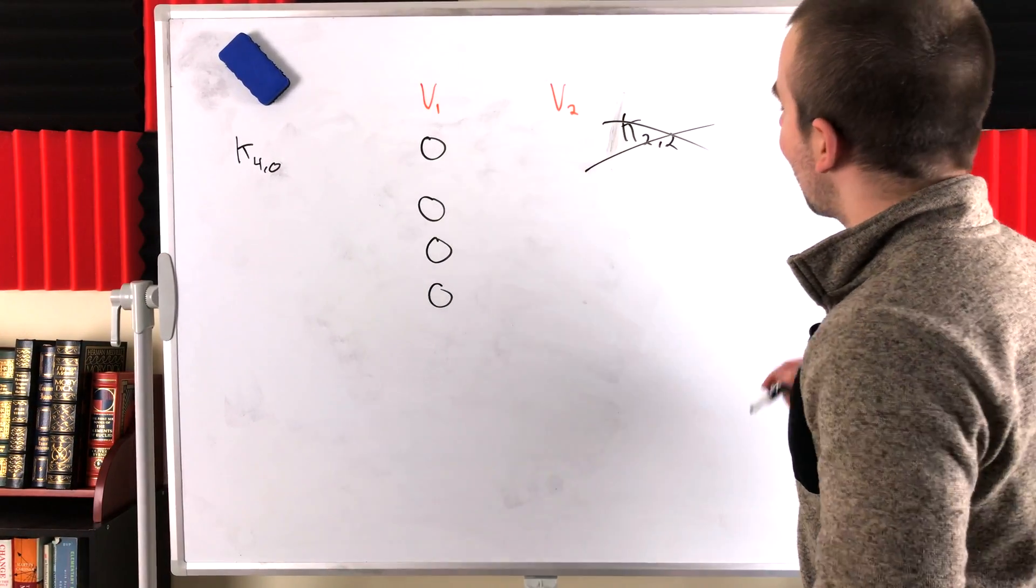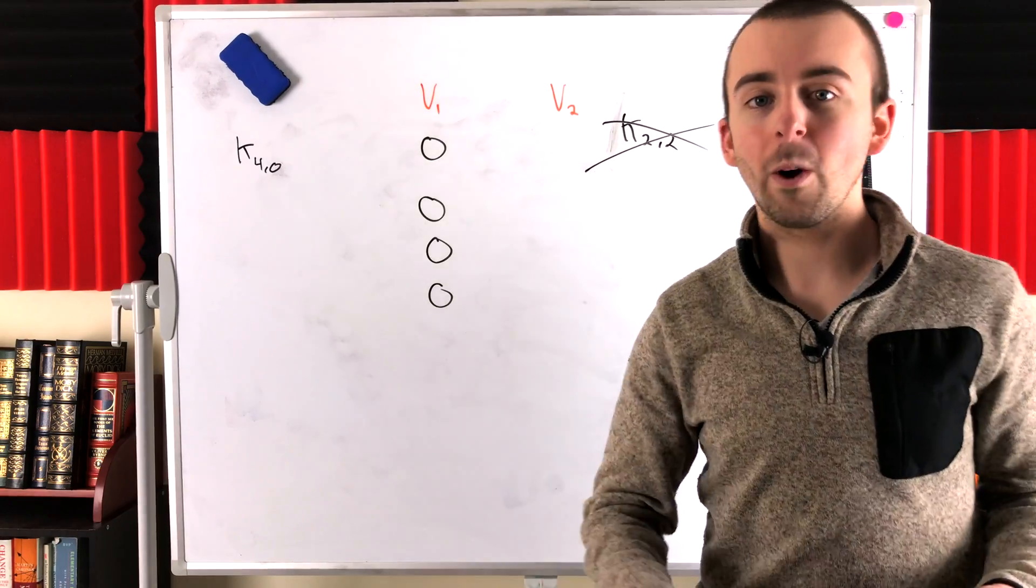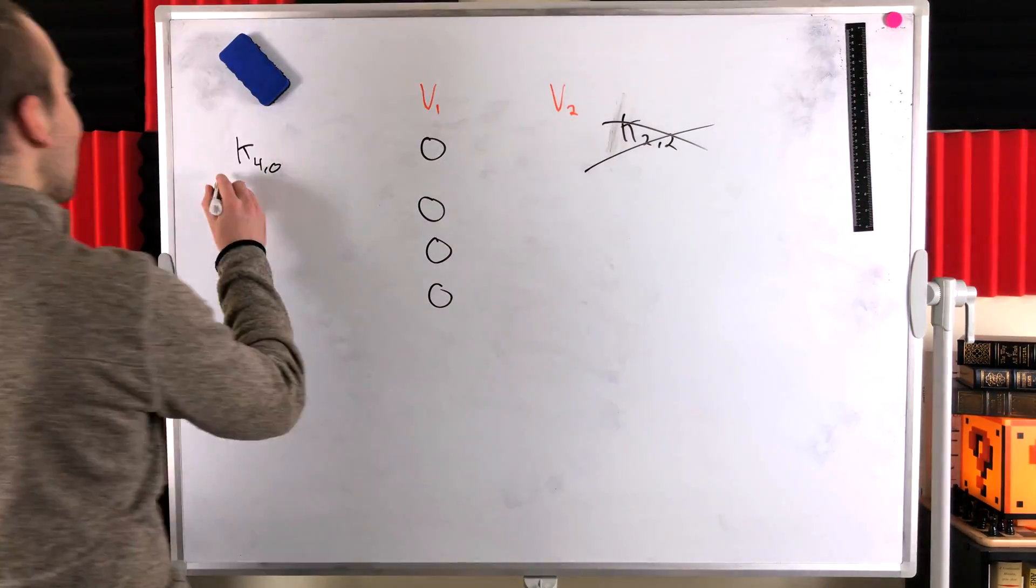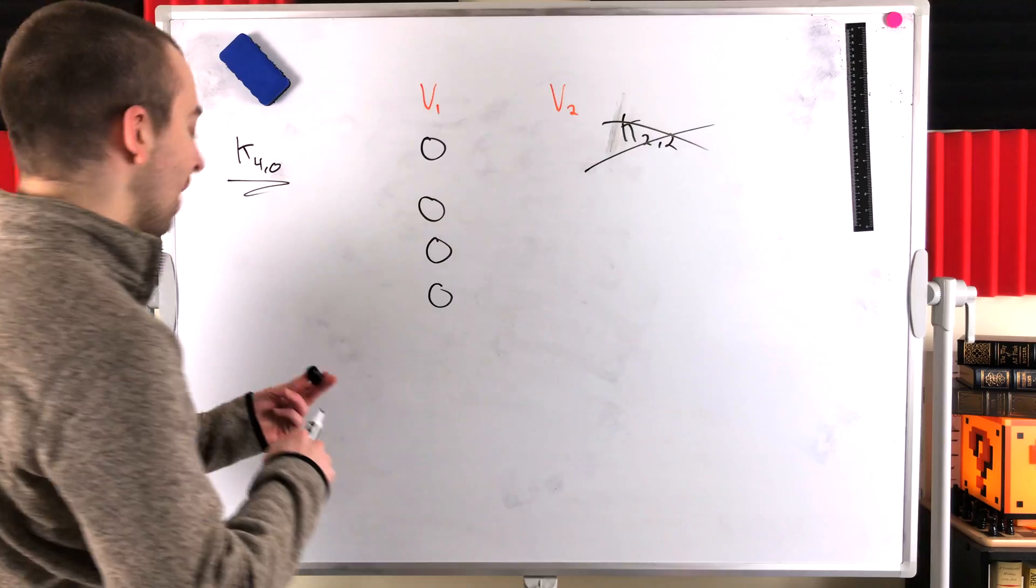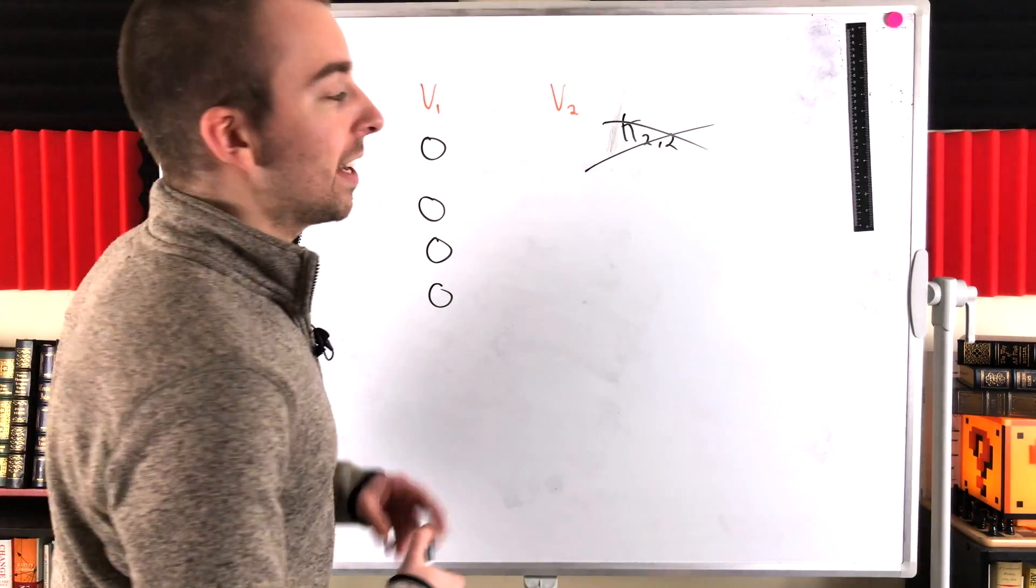So hopefully that makes sense. It's not the complete bipartite graph K22, which has four edges. But it is K40 as useless as that may be. And hopefully that helps clear up some of the definitions.